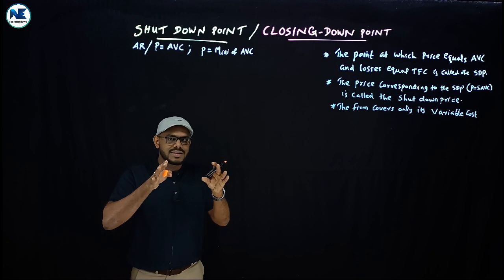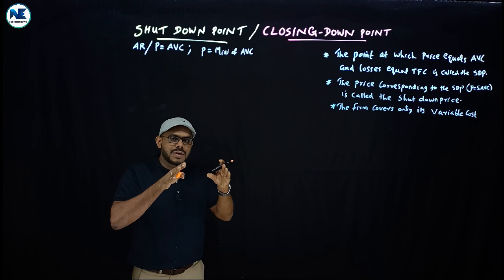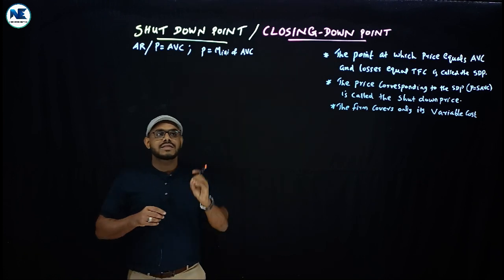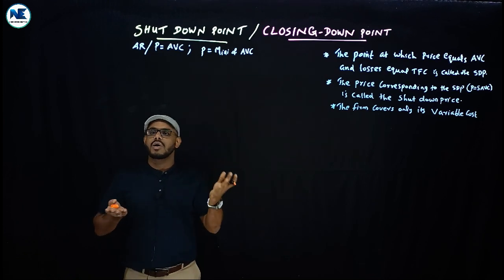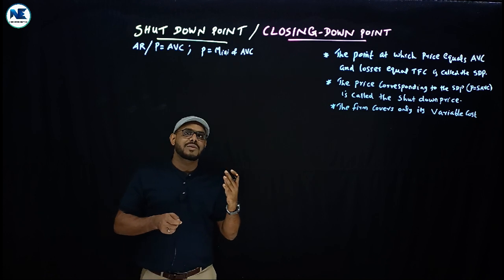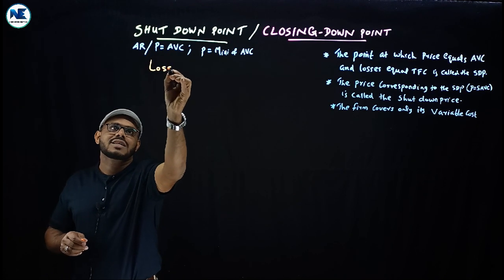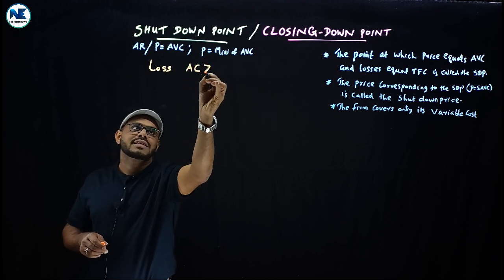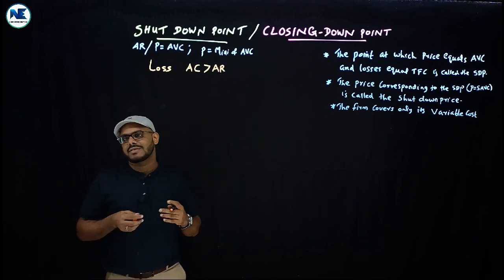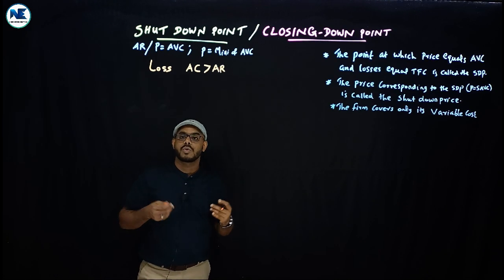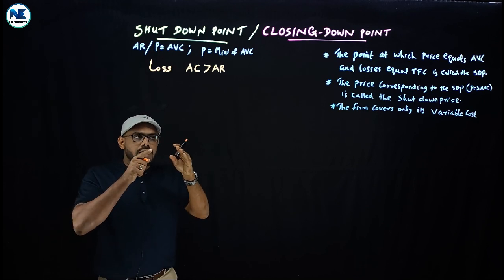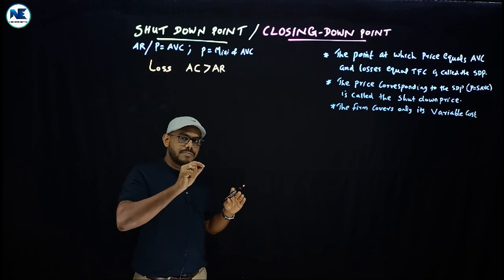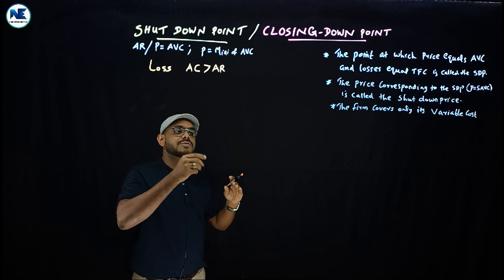At the shutdown point, for the firm, average revenue equals average variable cost, meaning the firm is incurring a loss. We know that loss occurs when average cost is greater than average revenue, as we have already discussed in short-run and long-run equilibrium. Even so, the firm is able to cover its variable cost.